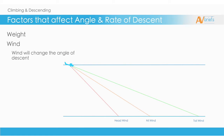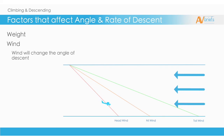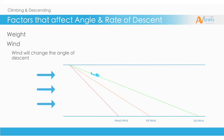Wind will change just the angle of the descent. A headwind, from in front of you, will push you backwards, making you travel less distance over the ground. A tailwind, from behind you, will help you travel further over the ground.